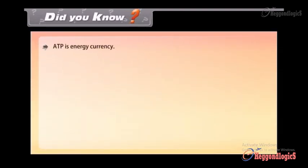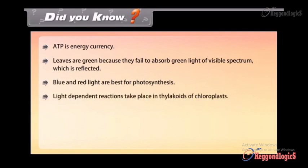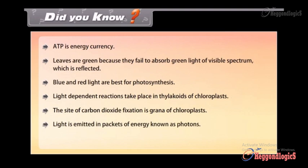Did you know? ATP is energy currency. Leaves are green because they fail to absorb green light of visible spectrum which is reflected. Blue and red light are best for photosynthesis. Light-dependent reactions take place in thylakoids of chloroplasts. The site of carbon dioxide fixation is grana of chloroplasts. Light is emitted in packets of energy known as photons. The splitting of water is known as photolysis.